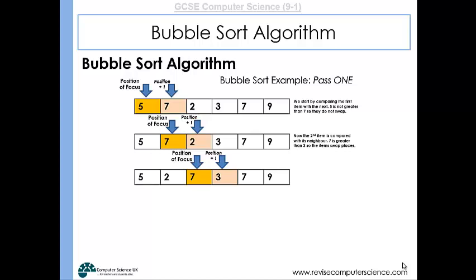We now move the position of focus up one and because the seven had swapped with the two, we are still looking at the number seven but now in the third position and we're comparing it with the item after that. So the seven and the three are compared, they are in the wrong order so they swap.